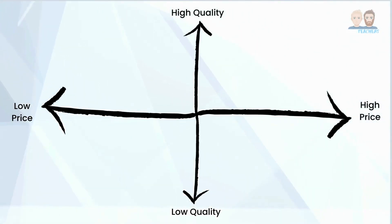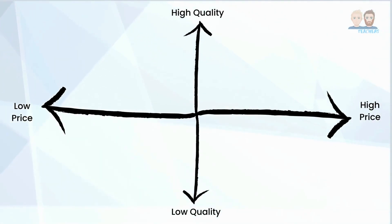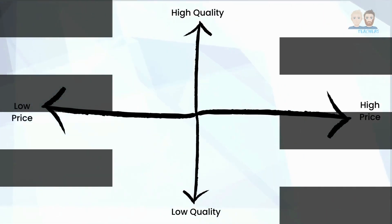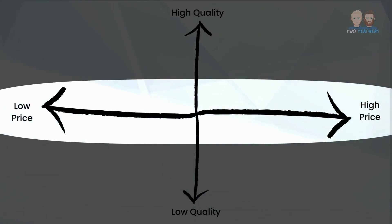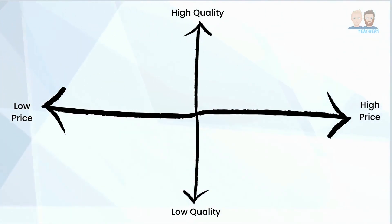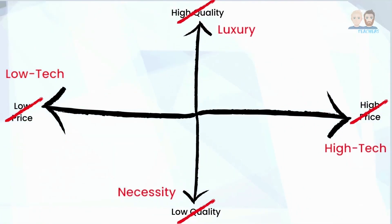On your screen now you can see a market map. It's a two-dimensional model with one vertical axis going from the bottom of your screen to the top representing the quality ranging from low to high. You will also see a second axis which is horizontal going from the left hand side of your screen to the right representing the price a customer is charged. If a business ever wanted to analyse a market against a different set of attributes, they can just change them, it's that simple.